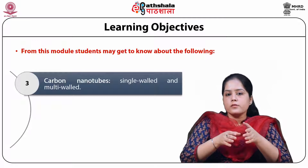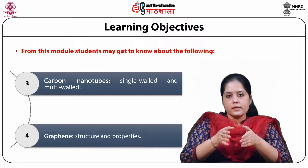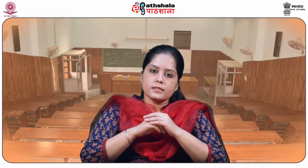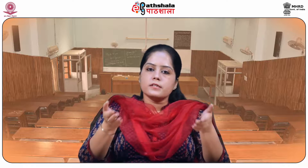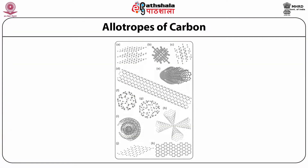Lastly, we will also discuss the structure and properties of graphene. An assembly of carbon atoms can exist in different distinct forms differing in crystal structure with significantly varied physical properties, and this property is known as allotropy. This figure shows the different allotropic forms of an assembly of carbon atoms.